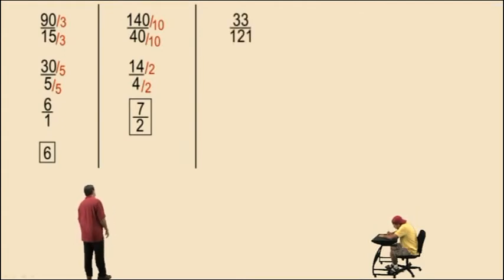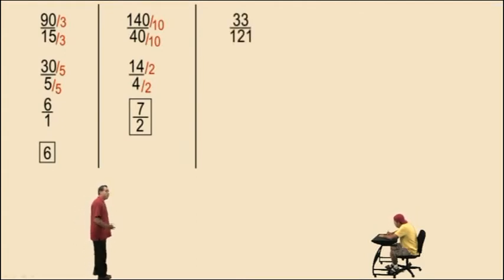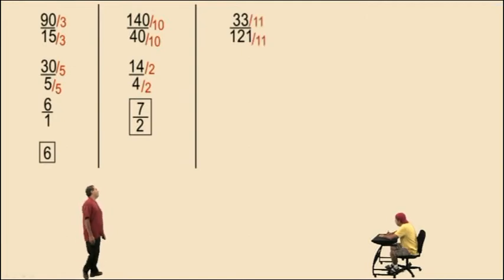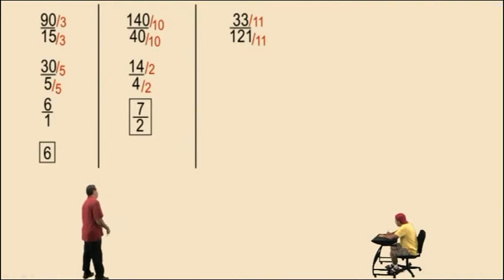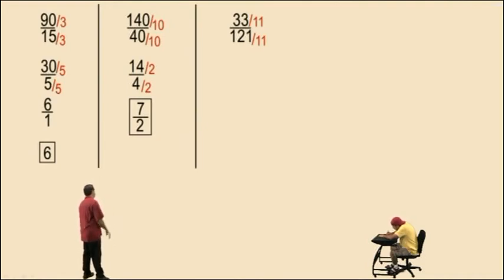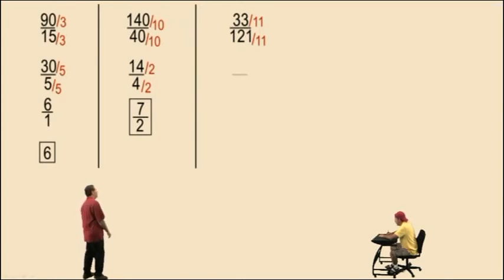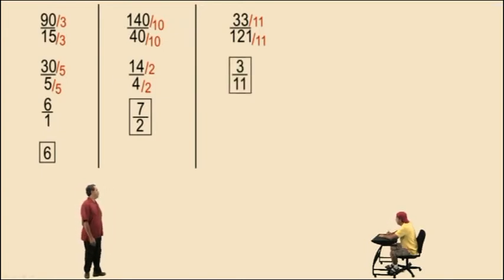Here we have 33 divided by 121. These numbers are from your times tables — they're both divisible by 11. 33 divided by 11 is 3 because 3 times 11 is 33. 121 divided by 11 is 11 because 11 times 11 is 121. And there's your answer.